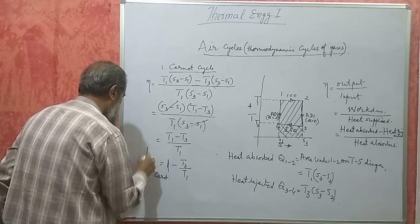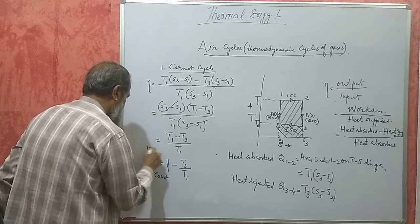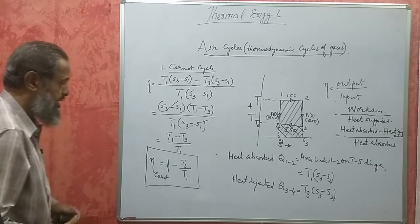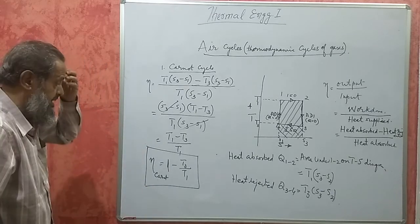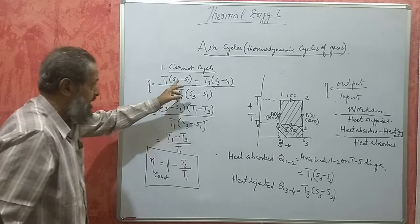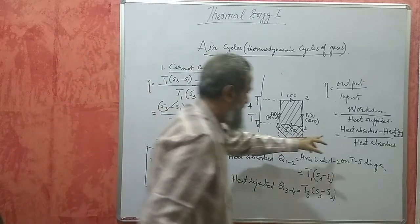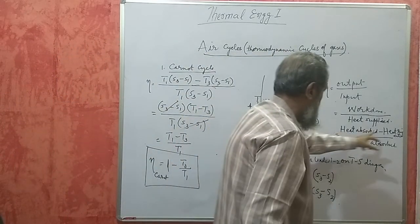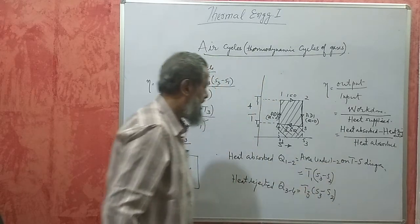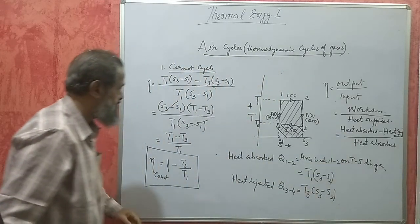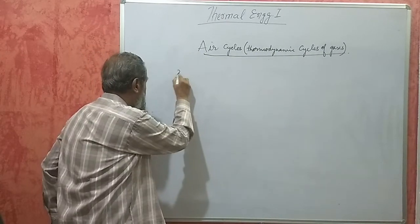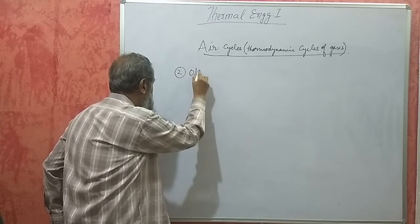For all cycles, the general formula is: efficiency = (heat absorbed − heat rejected) / heat absorbed. This is common to all air cycles.